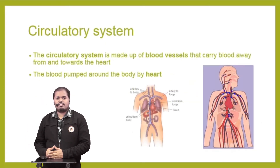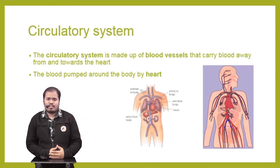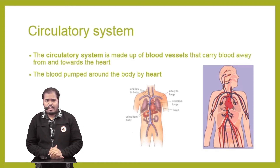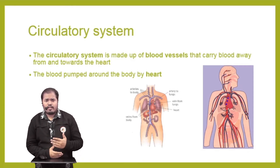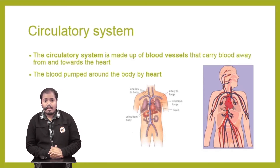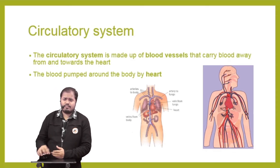Next is the circulatory system. The circulatory system is the process where oxygen — and also nutrition — is carried throughout your body. It consists of blood vessels which carry blood around the body, delivering oxygen and removing the carbon dioxide produced in the body. The blood is pumped by the heart.